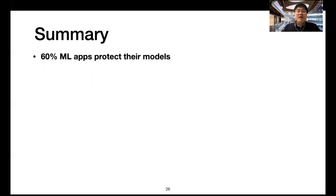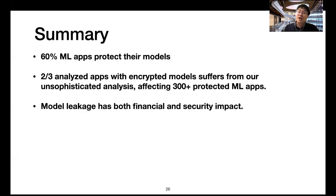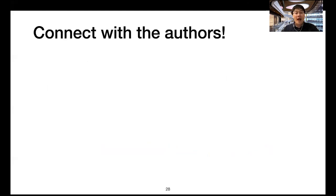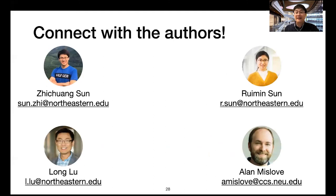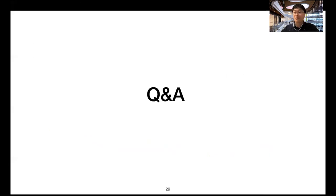In summary, our analysis shows 60% of machine learning apps protect their models. Among them, two-thirds of analyzed apps with encrypted models suffer from our unsophisticated analysis, affecting 300+ protected machine learning apps. Model leakage has both financial and security impact. The takeaway message is that we need more research into protecting on-device machine learning models to mitigate this serious privacy problem. Our project is also open-sourced on GitHub.